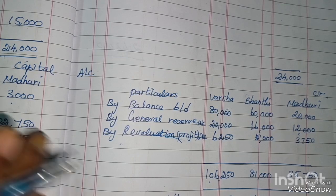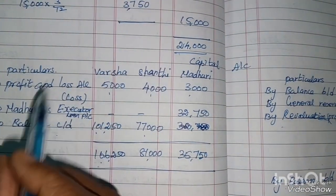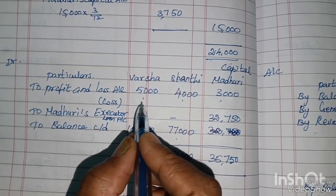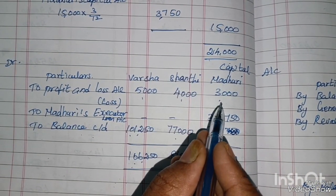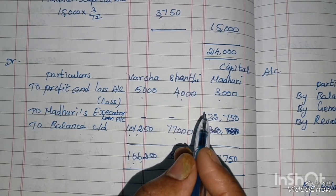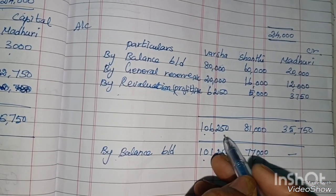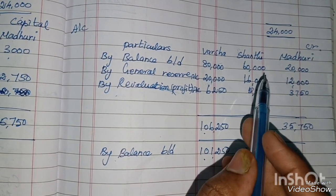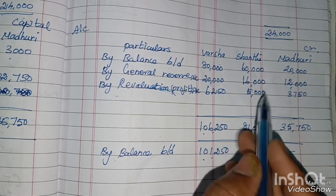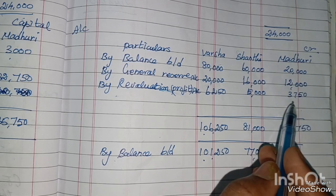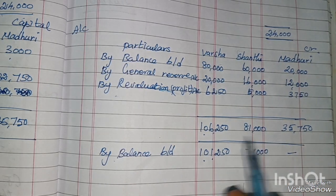On the debit side of the capital account: Profit and Loss loss entries are ₹5,000, ₹4,000, and ₹3,000. After totalling, the debit side totals come to ₹16,250 for one partner. Credit side totals: ₹60,000, ₹16,000, ₹5,000 giving ₹81,000 for Sandhi. For another partner: ₹60,000 + ₹100,000 + ₹16,500 = ₹35,000 approximately.